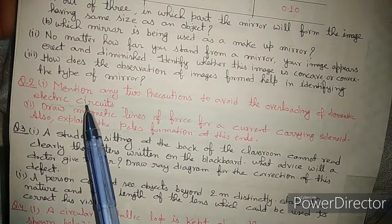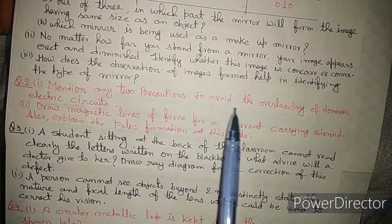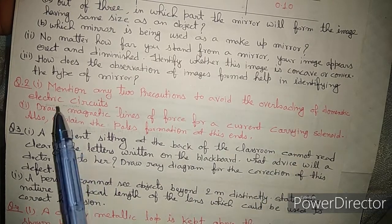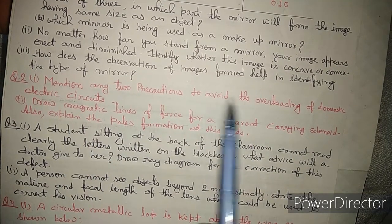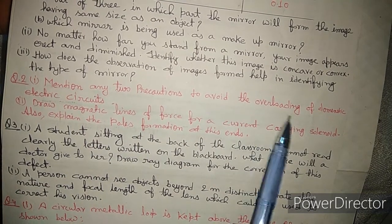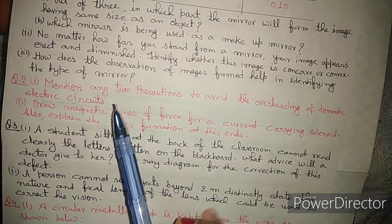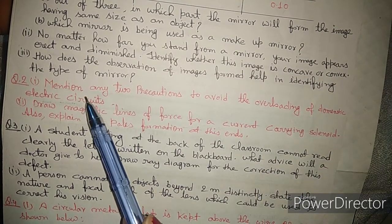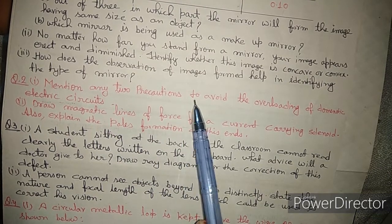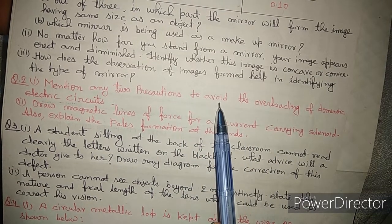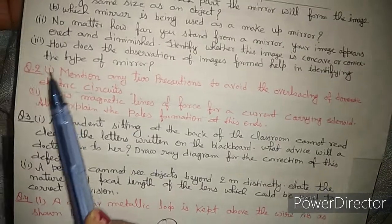The second question asks you to mention any two precautions to avoid overloading of a domestic electric circuit. Overloading and short-circuiting in domestic electric circuits are both very important topics. You need to write down two precautions to avoid overloading.